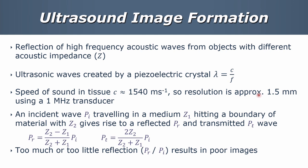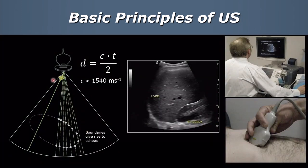Ultrasound image formation relies on the reflection of very high-frequency acoustic waves from a piezoelectric transducer. A simple equation: wavelength equals velocity of sound in tissue over frequency. With a typical velocity of sound in tissue of about 1,500 meters per second, we get a resolution of about 1.5 millimeters using a one-megahertz transducer. A pulse of ultrasound energy reflects from one tissue interface and then again from the other side, and by steering the beam across the area we build up images.